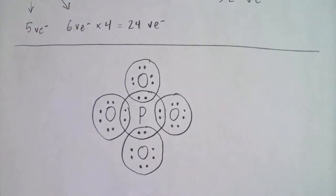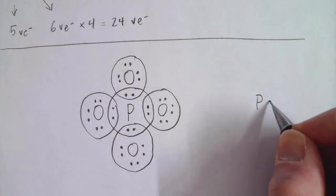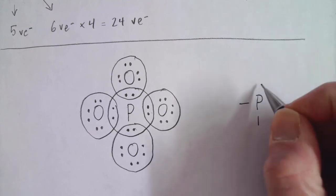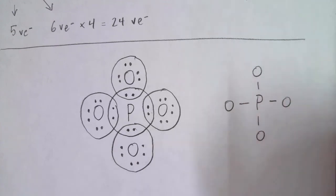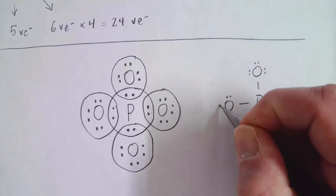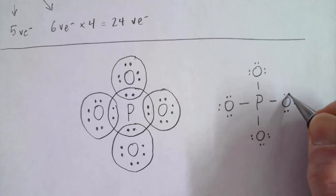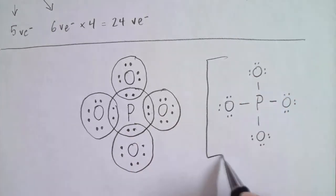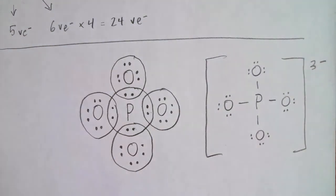So if I were to go ahead and finish my structure here on the right, I would put phosphorus in the middle, single bonds representing two shared electrons, and each oxygen has six non-bonding electrons. We would bracket the entire molecule and indicate that it has a negative three charge. So that is a valid Lewis structure.